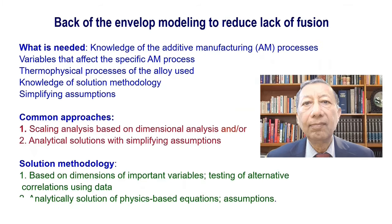Here we consider what we need to build a back of the envelope calculation model for additive manufacturing. We need to know what variables are important for the process. We need to know the thermophysical properties of the alloy that we are going to use as a feedstock. We need to know how to make the solution for the model, and also we need to understand the simplifying assumptions so that we know the limitations of the model.